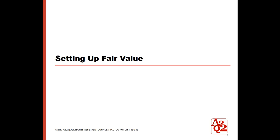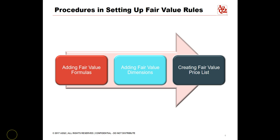You can assign fair values to items and item revenue categories by setting up a fair value price list. To complete the fair value price list, you must have fair value formulas. You may also add dimensions to the fair value price list. Complete the following procedures to set up your fair value rules: adding fair value formulas, adding fair value dimensions, and creating the fair value price list.